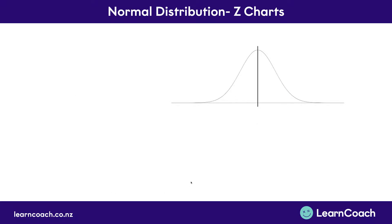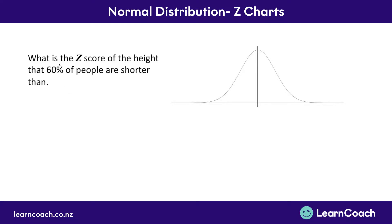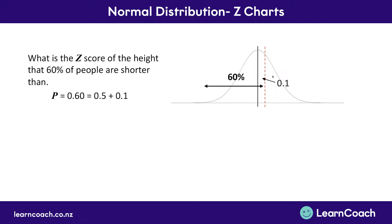Let's look at one last question. In this case, I want to go backwards to see how we can go from a probability to a z-score. If we've got a question like: what is the z-score of the height that 60% of people are shorter than? That means there's a height where 60% of people are shorter than it, and we need to find its z-score. This 60% is going to be made up of the 50% on the left-hand side and a 10% on the right-hand side — a little 0.1 in here and half of the population on the left, making up our total of 0.6 or 60%.